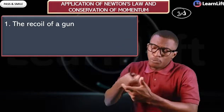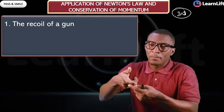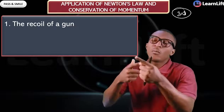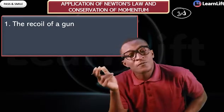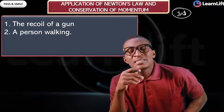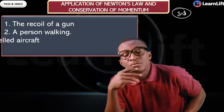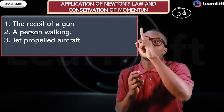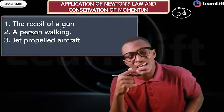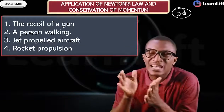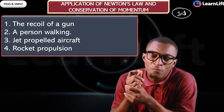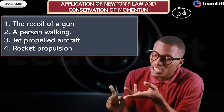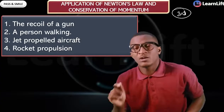Number one is the recoil of the gun. Number two is a person walking. Number three is a jet-propelled aircraft — the jet is going up, the exhaust from the aircraft is coming down. Number four is rocket propulsion. These are the four applications of Newton's third law and conservation of momentum.